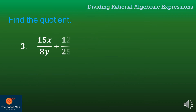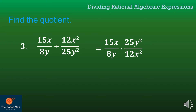Let's have another example. If I have 15x all over 8y divided by 12x squared all over 25y squared, I'll copy my dividend, then the division symbol becomes multiplication. Get the reciprocal of the divisor. Take note that I can factor out 15x as well as 12x squared by 3x. So 15x divided by 3x gives me 5, and 12x squared divided by 3x gives us 4x.